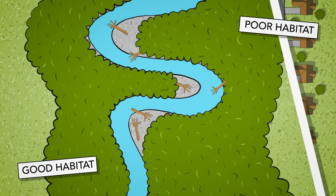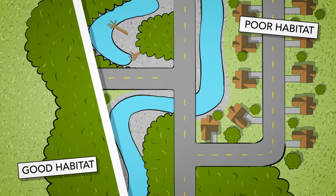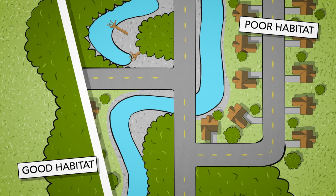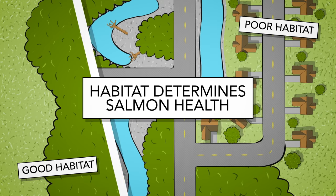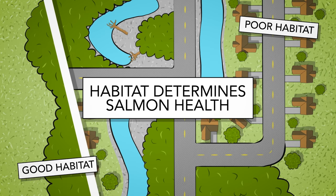As long as lost and damaged habitat continues to restrict naturally spawning salmon populations, we will have to depend upon hatcheries to produce fish for harvest. That is because habitat, more than any other factor, determines the health of a salmon run.